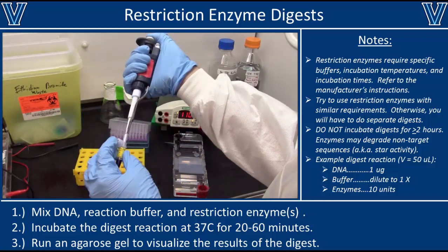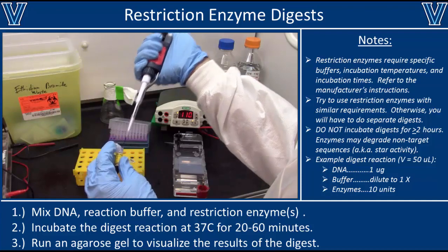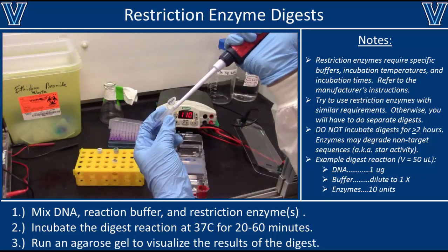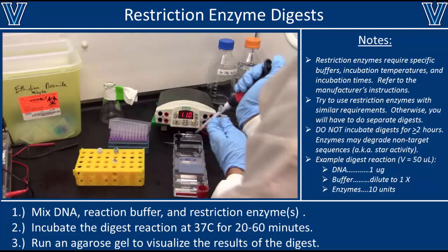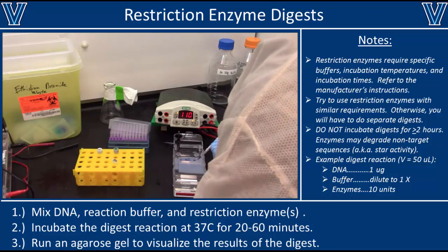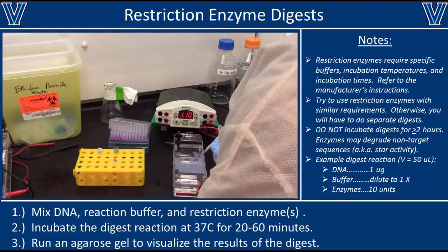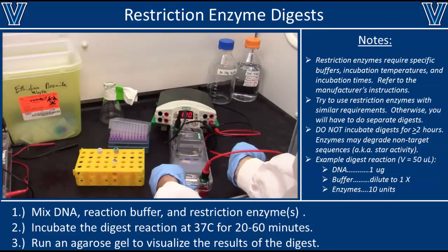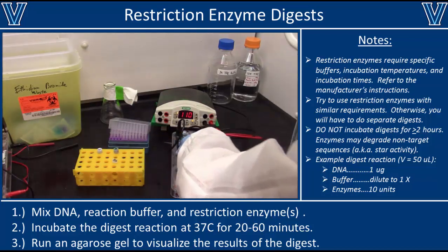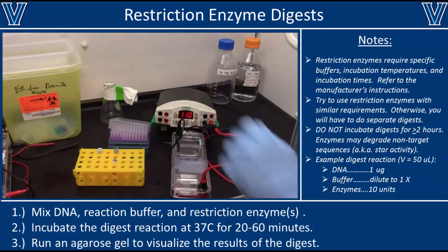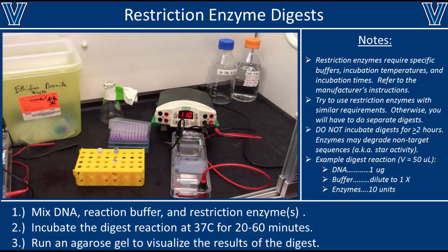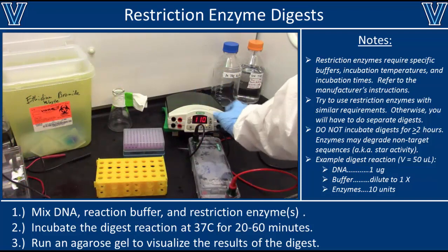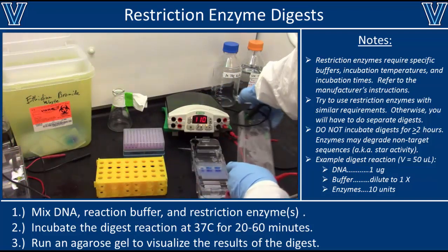Once your samples are ready, begin by adding 10 to 20 microliters of a nucleotide base pair ladder to your agarose gel — this ladder will help confirm the success of your digest. Next, add your digest samples to the gel. Notice that I'm splitting my 50 microliter reactions into two separate wells and skipping a lane between each sample to avoid cross-contamination. Once samples are loaded, hook up the electrodes and run the gel at 110 volts for 20 to 30 minutes, stopping when the dye bands have migrated approximately halfway through the gel.